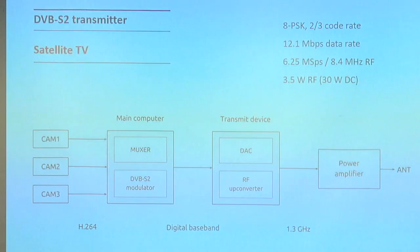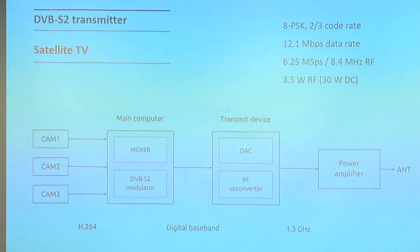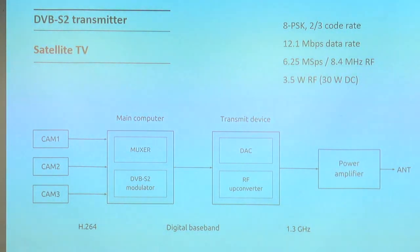In addition, the transport stream is used to create a DVB-S2 signal in the digital domain, so we do a lot of digital signal processing on the main computer. After that, a transmitter device takes the digital signal and transforms it into radio frequency — basically a digital-to-analog converter plus an RF upconverter — and the output is a 1.3 GHz signal.